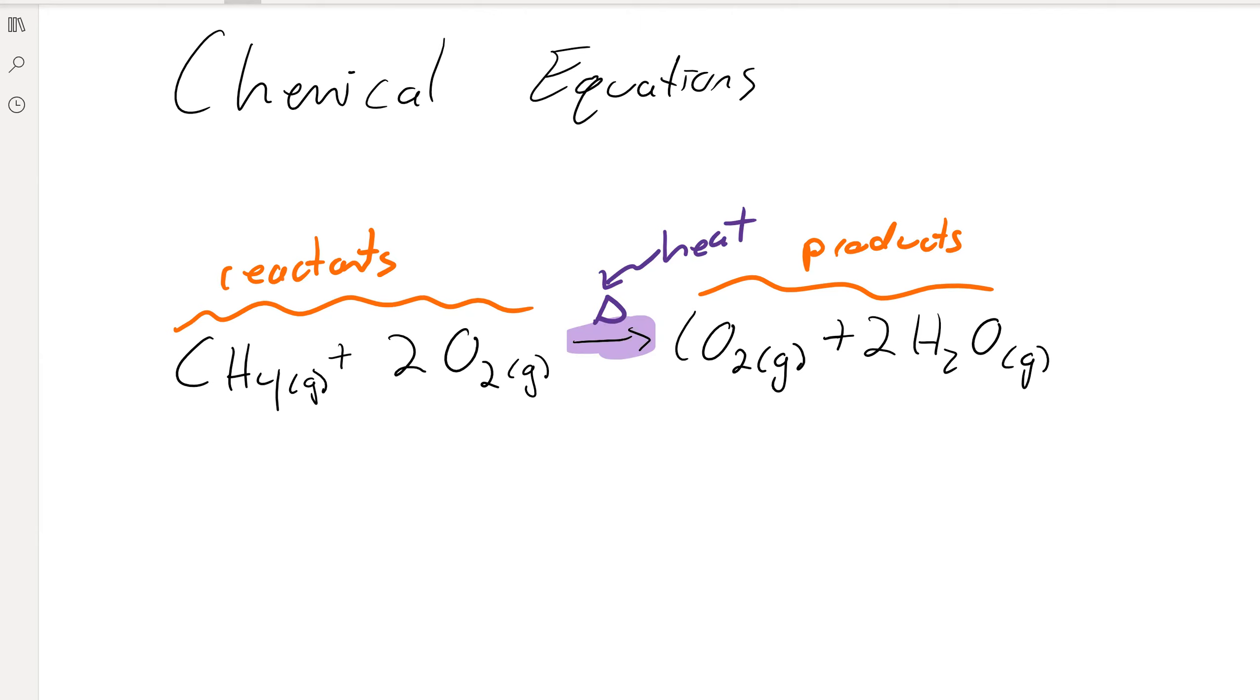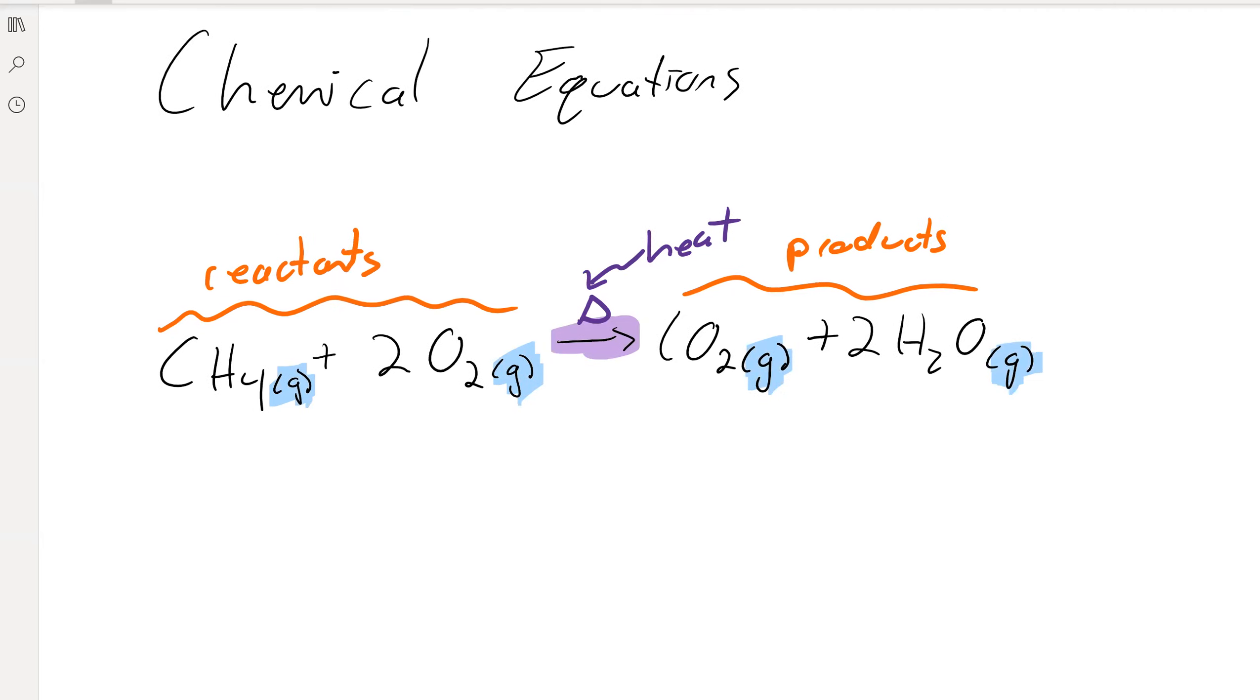So anyways, the reactants turn into products. We also have these little subscripts right over here. In this case, they're all g for gas, but this describes the phase of the compound.